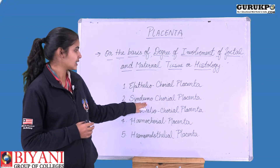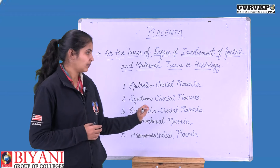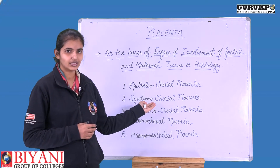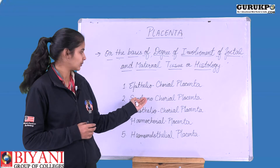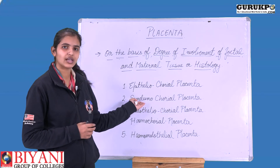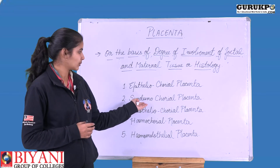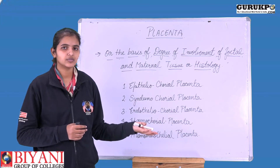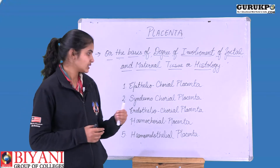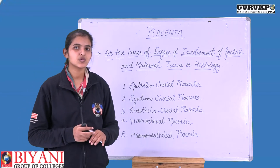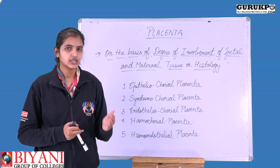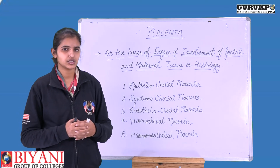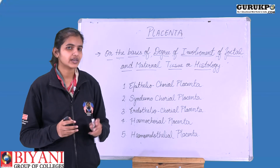Next, we go to syndesmochorial placenta. The first part of the name refers to the mother's tissue. What does syndesmo mean? Epithelium, endothelium, ectoderm, endoderm — these we all know. Syndesmo is basically connective tissue. The bonding or involvement between the mother and placenta is increasing with each degree.